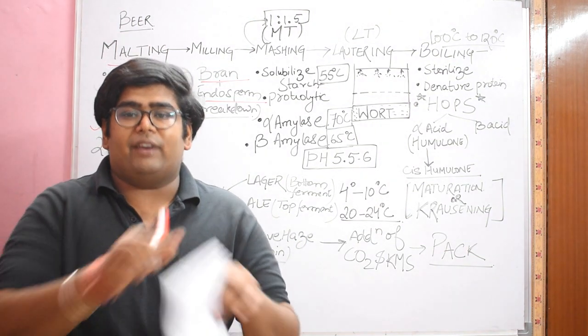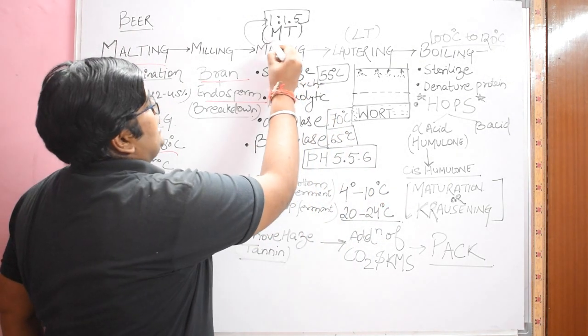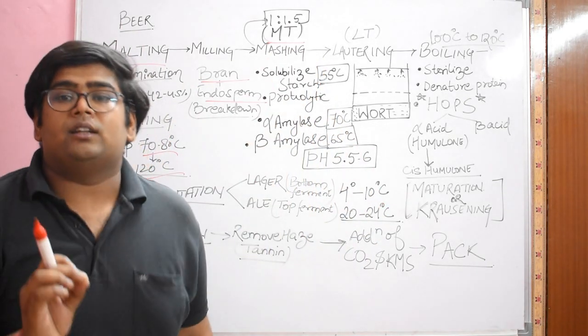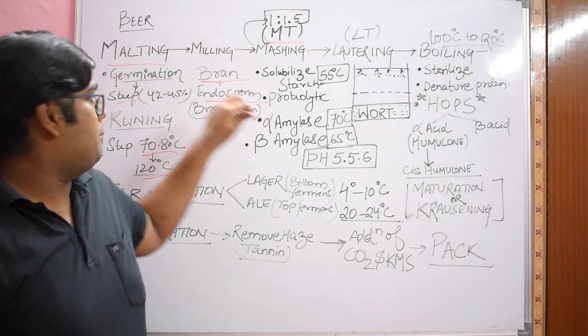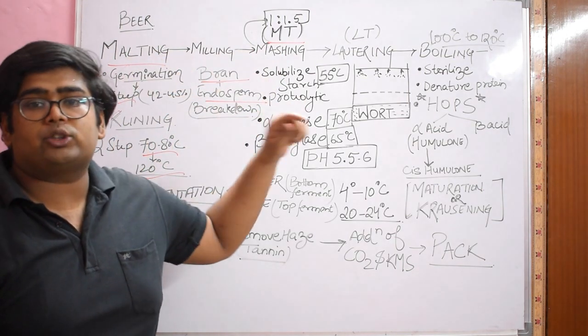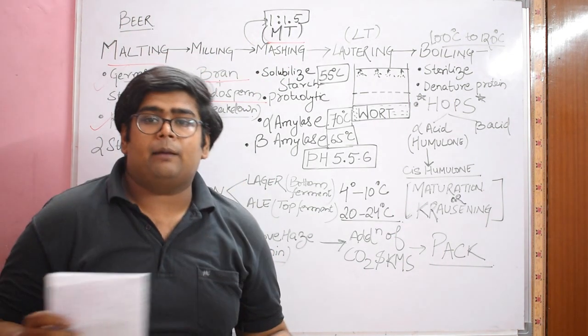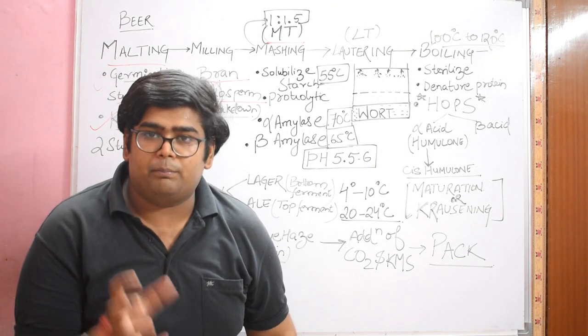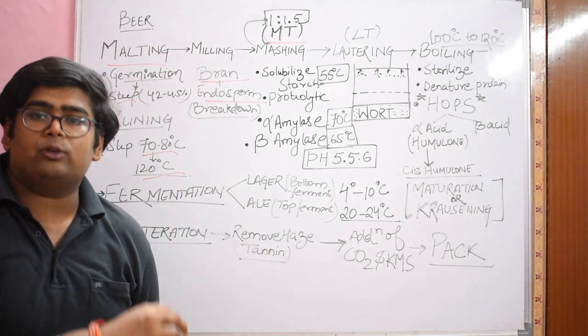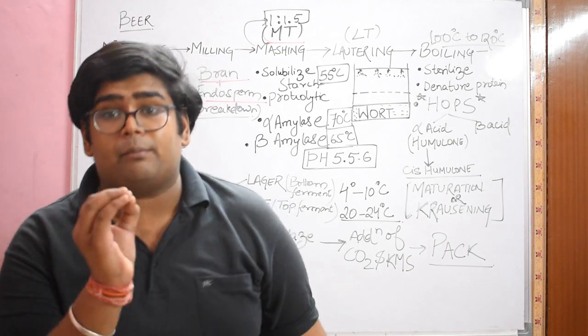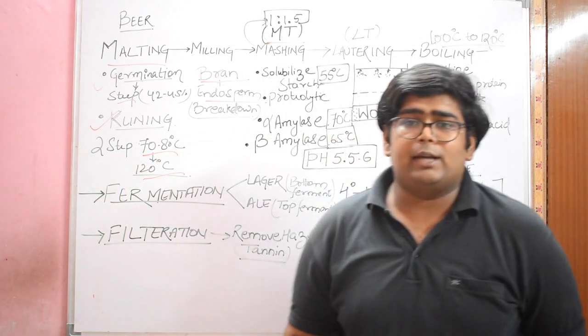After milling, we take it for mashing. The ratio we use is: if we have one kilo of milled barley, we add 1.5 times water in the mash tun. Basically what's happening is we're giving temperature to this cereal and water mixture so that the enzymes can convert the complex carbohydrates into simpler fermentable sugars, which are maltose and sucrose.